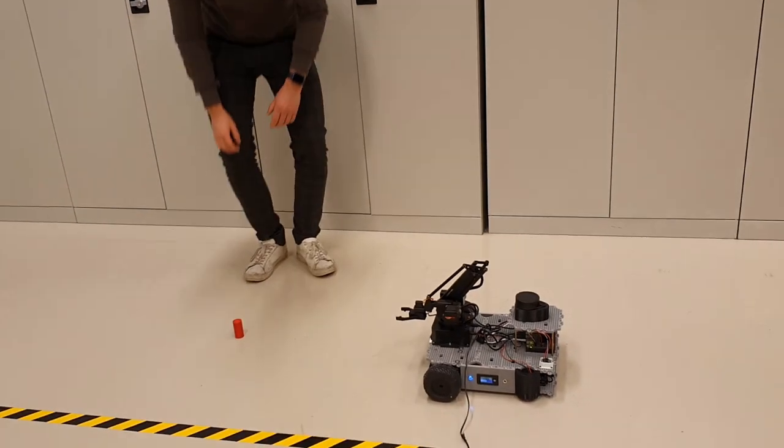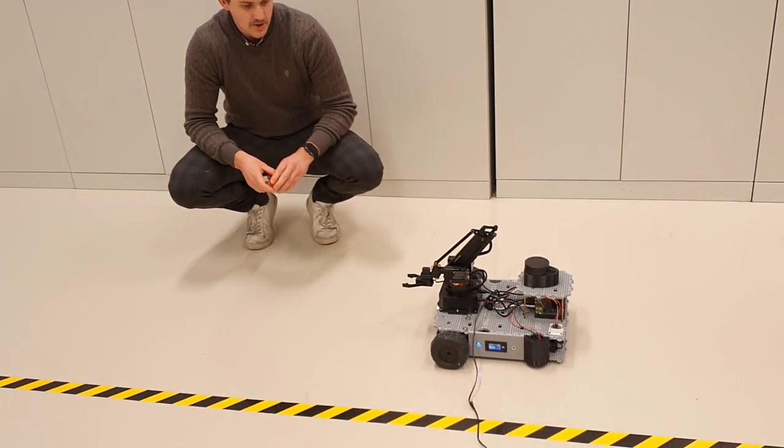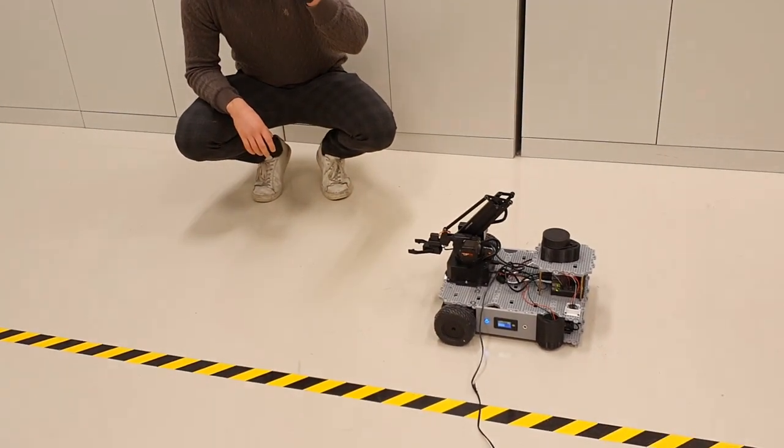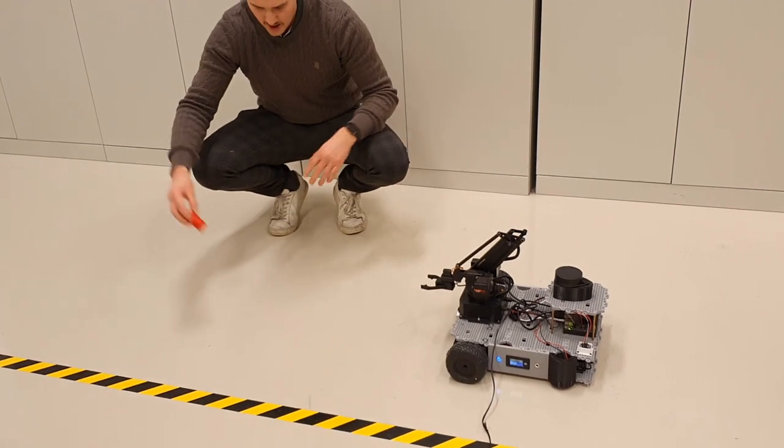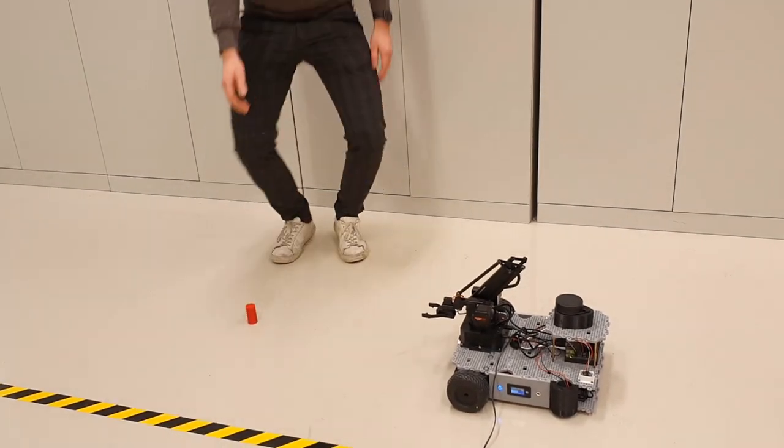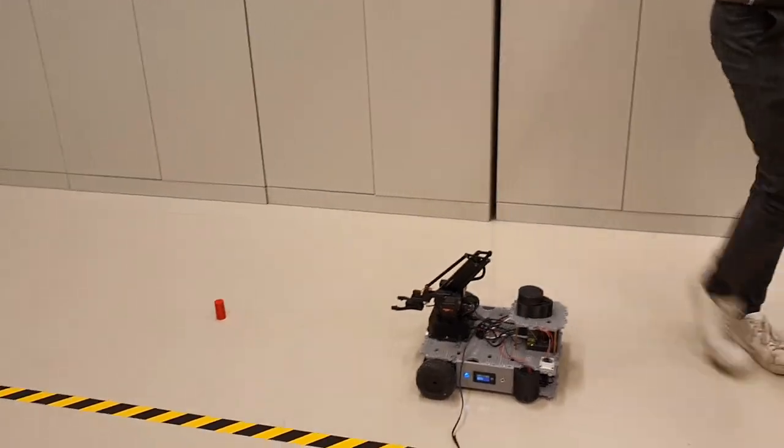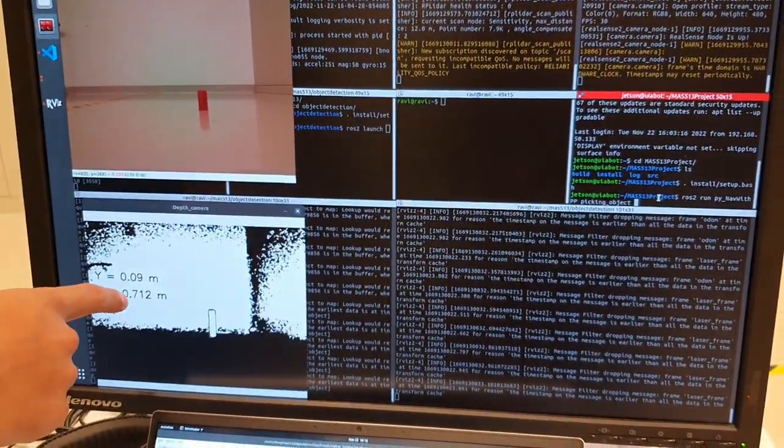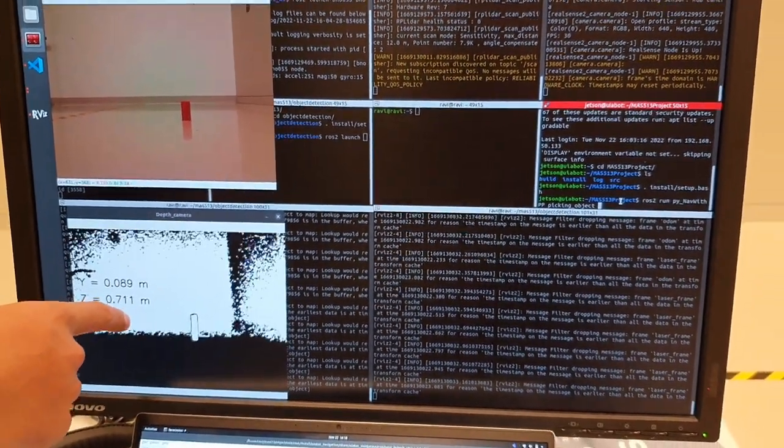For this demonstration we're going to show you the robot doing navigation and pick and place of this object from a randomized placement that could be here. As you can see on this screen, we have the object detection, detecting the object and estimating the position of the object.